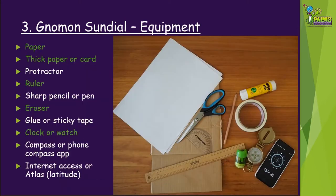To make your sundial you will need the following equipment: a couple of pieces of normal paper, thick paper or card, a protractor, a ruler, a sharp pencil or pen, an eraser, glue or sticky tape, a clock or watch, a compass or phone compass app, and internet access or an atlas to find out latitude.